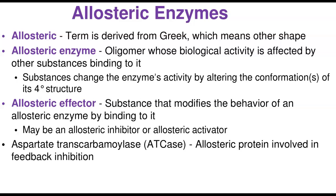The term 'allosteric' is derived from a Greek word. A lot of modern science has Greek origins. 'Allos' means 'other' or 'other site.' So allosteric enzymes are those that have more than one site: one is the active site where the substrate binds, and the other is where activators or inhibitors bind. Most of them exist as oligomers because they have more than one subunit.